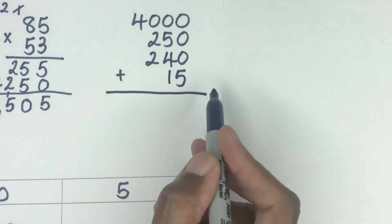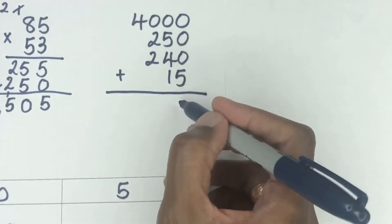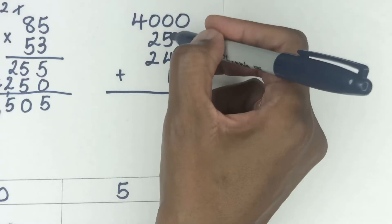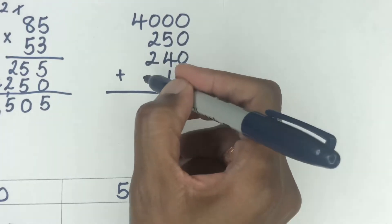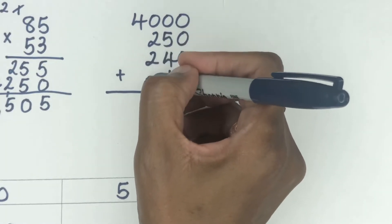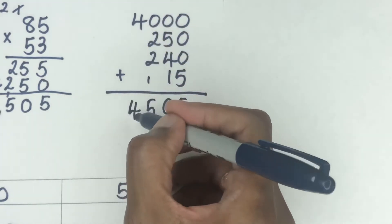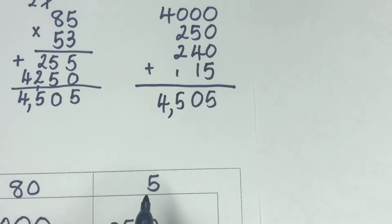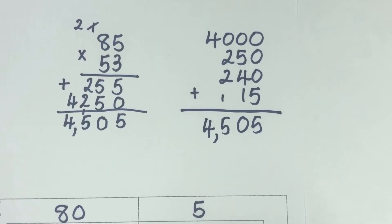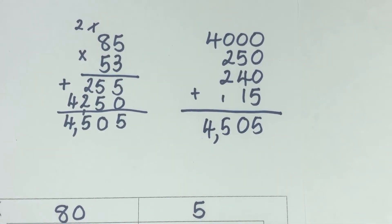So we're going to add all of that together. So in the ones place, we have a five. In the tens place, we have five and four is nine and one is 10. So we regroup that there. Two plus two is four and one is five. And four plus nothing else will still bring that four down. So here you can see the answers next to each other. Of course, they're going to be the same, just two different methods. So 4,505.